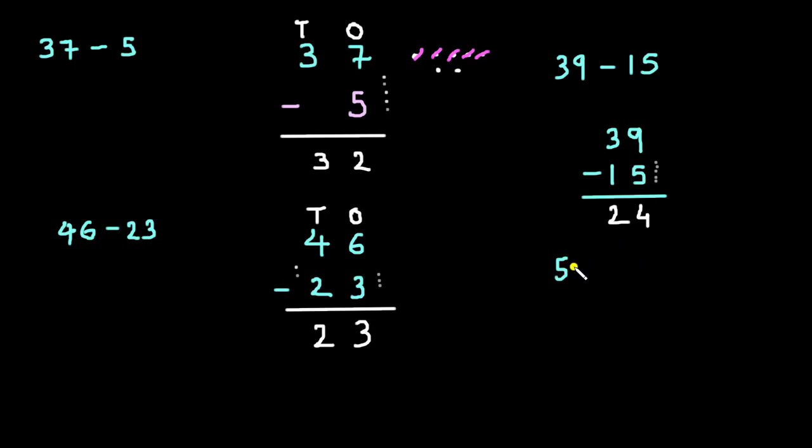One more. 57 minus 24. Again, pause the video and subtract 24 from 57. Okay, 57 minus 24. Now, here we have 7 at ones place and here 4 at ones place. So, 7 minus 4.